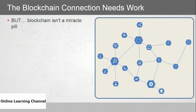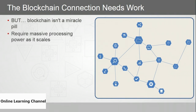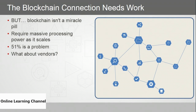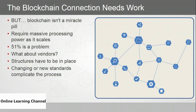But I want to be balanced — blockchain is not a panacea. It's not the miracle pill that will fix all our problems. Blockchain requires massive processing power as it scales. The 51% problem must be addressed — any blockchain implementation must be secure enough not to let 51% of the network be taken over by bad actors. And we must ensure vendors implement blockchain securely. Changing or establishing new standards will complicate things and must be taken into consideration.